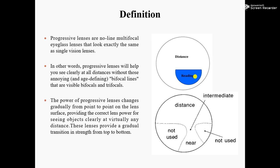The power of progressive lenses changes gradually from point to point on the lens surface, providing the correct lens power for seeing objects clearly at virtually any distance. These lenses provide a gradual transition in strength from top to bottom — the power is gradually distributed across the entire surface of the lens.